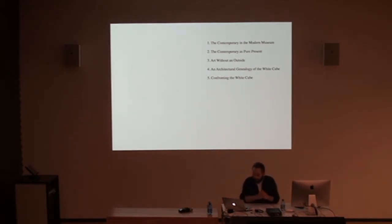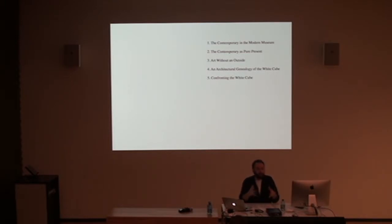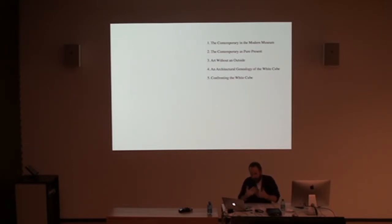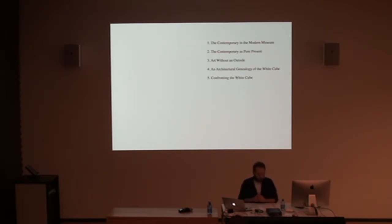Firstly, I'd like to talk about a recent exhibition at the National Gallery of Modern Art in Rome, to show how the contemporary is somehow inside or investing the modern museum. Secondly, I'll look quickly at contemporary debates on contemporary art, understanding it as a pure present. Then I'll show a genealogy of that condition from art practices, before making a move based on an architectural reading of this space, before concluding with remarks on what this can mean for art practices today.